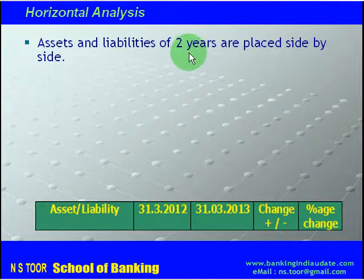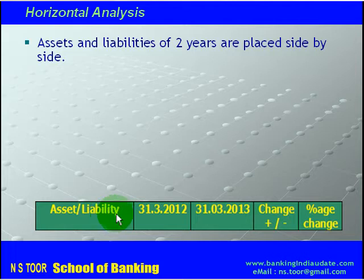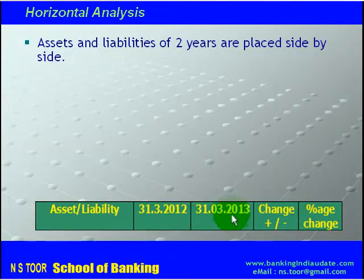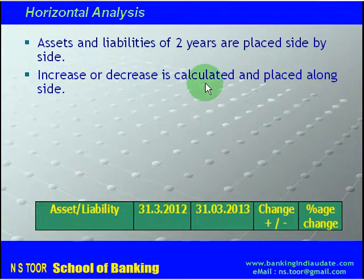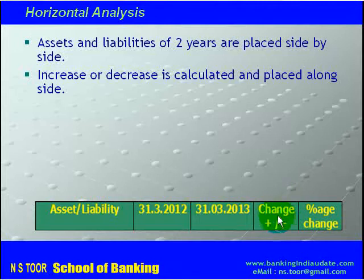So here we have assets and liabilities for one year, and these are assets and liabilities for another year — assets and liabilities of two years are placed side by side. Thereafter, the increase or decrease is calculated and placed alongside.